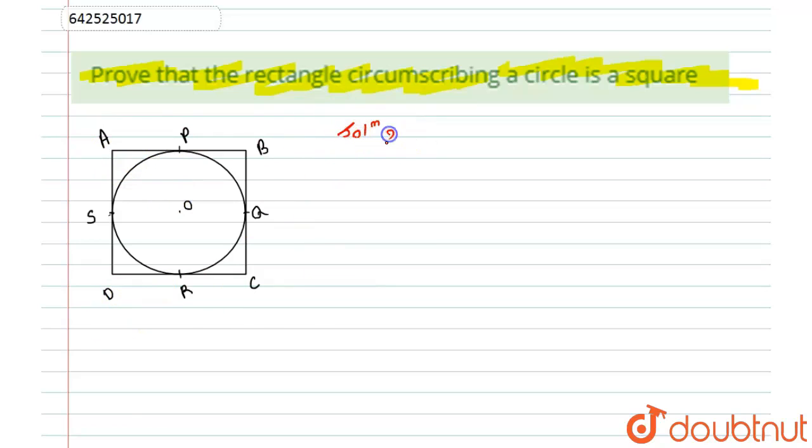First of all, it is given to us that ABCD is a rectangle. As we know that the opposite sides of a rectangle are equal, hence I can say that the length of AB will be equal to DC, and similarly the length of AD will be equal to BC. Let this be equation number one.